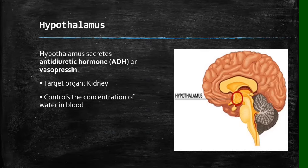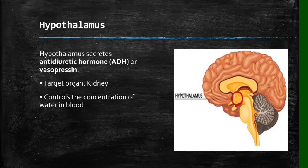This hormone is secreted to a particular target organ — the kidney. What it does in the kidney is control the concentration of water in the blood. This hormone is released in two situations. If your body lacks water, the anti-diuretic hormone is secreted, and once it reaches the kidney, it stimulates the reabsorption of water back into your body because you need water. You need to recover that water, as 70% of our body is made up of water.